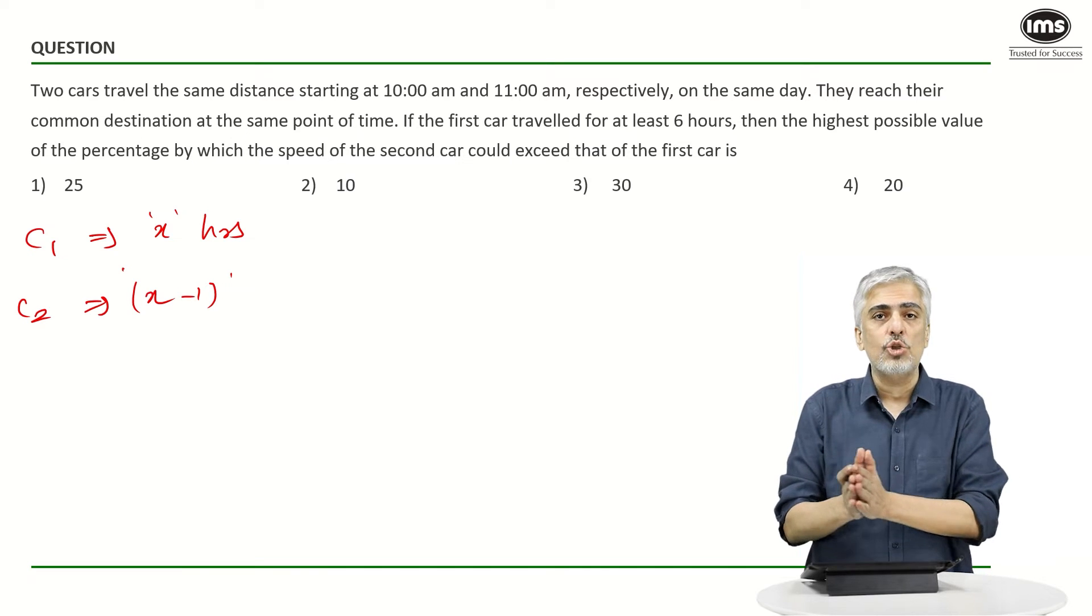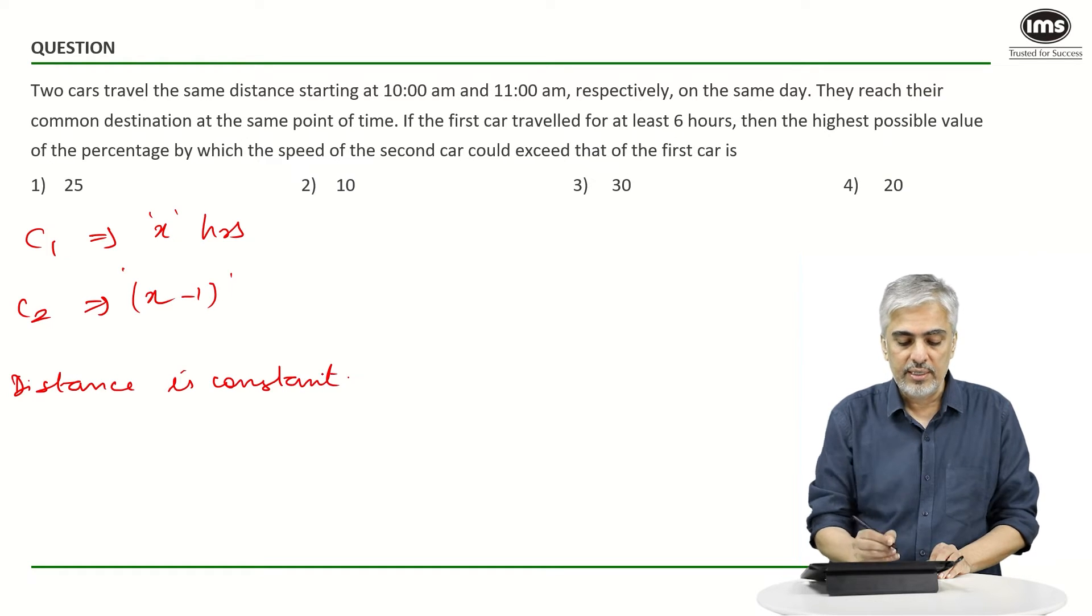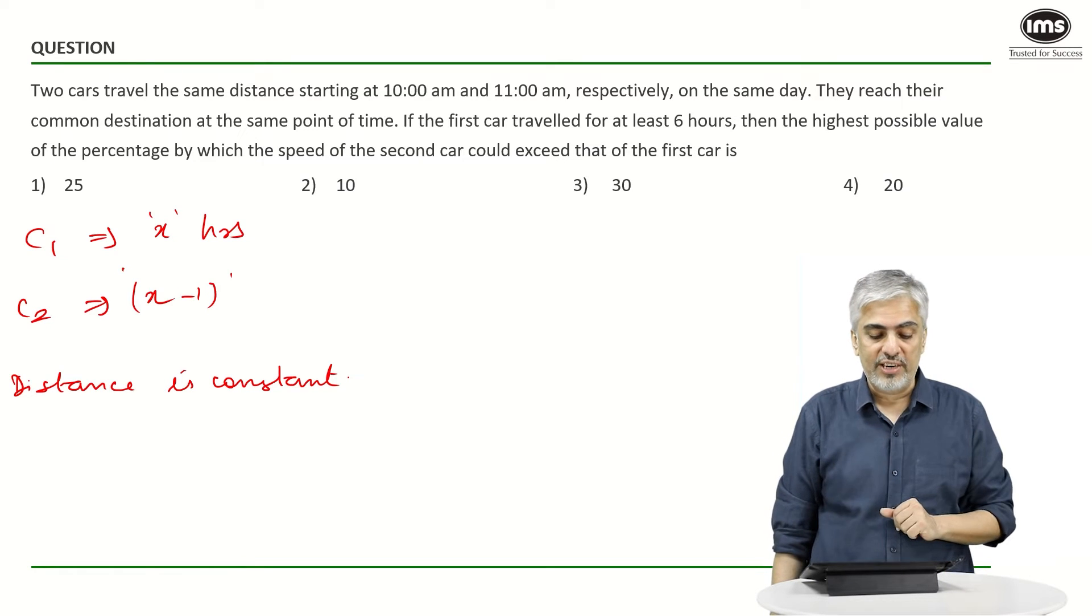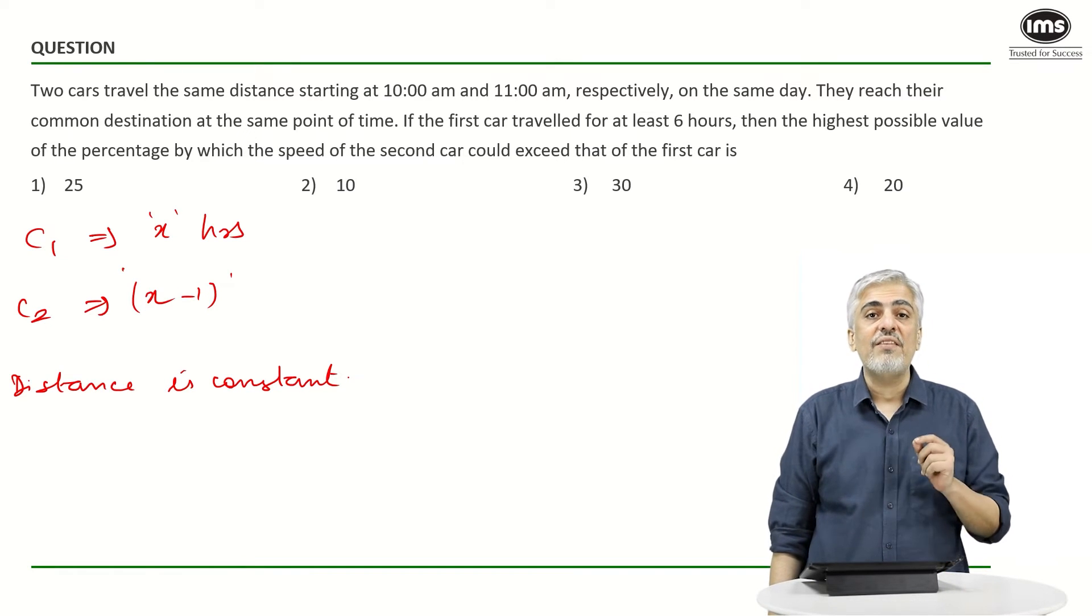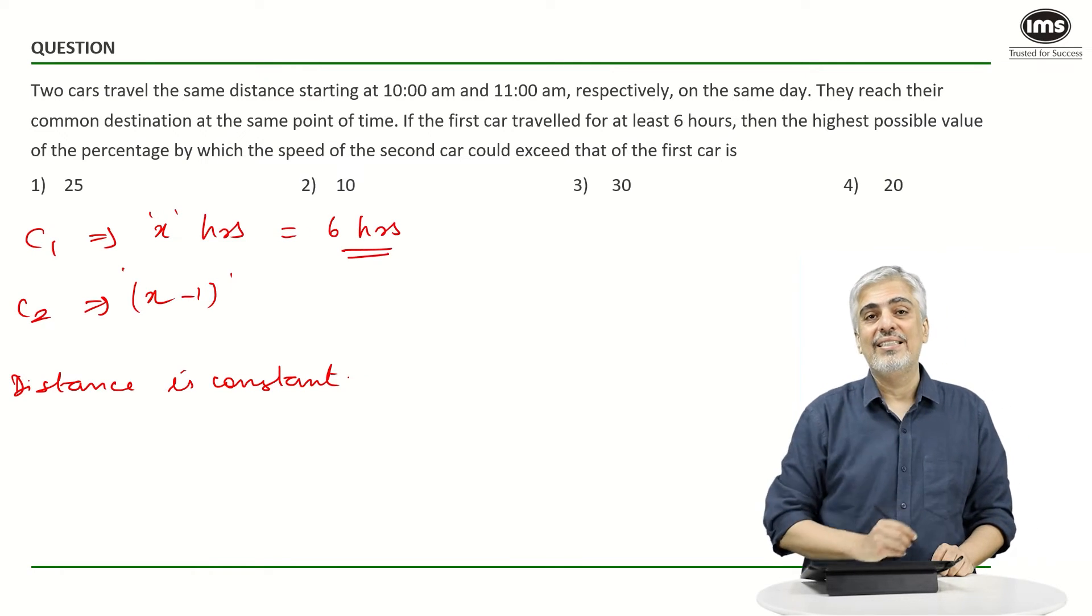So distance is constant. We know distance is constant. The question - right now let's continue the question - they reach the common destination at the same point of time. If the first car traveled for six hours, that means they have told us x is six hours at least.